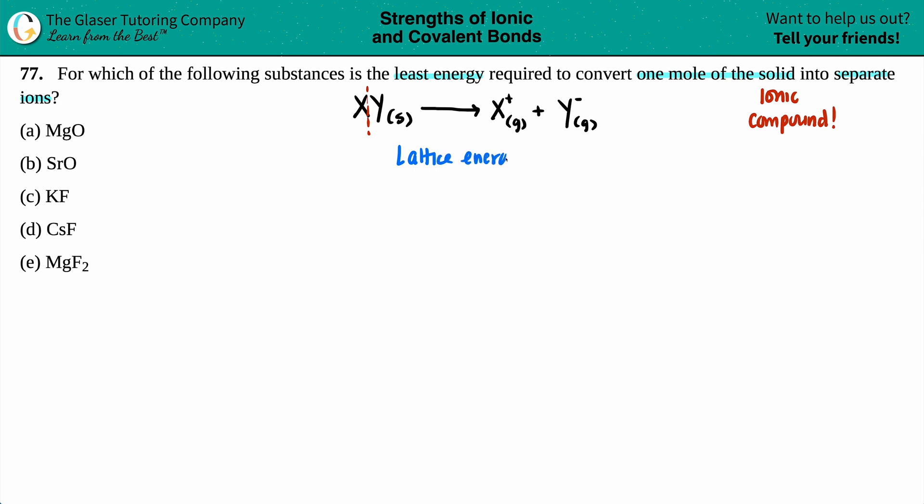The energy required to break the ionic bond. What we should do is write out each equation, and from there we can figure out which one's going to be the least, which one's going to be the most, and get down to the answer.